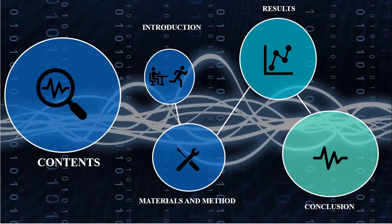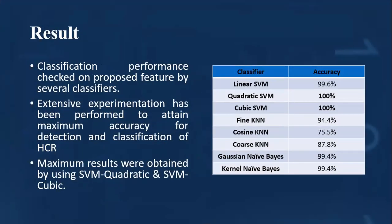Results: Results obtained from this classification are shown in this slide. Classification performance was checked on proposed features by several classifiers. Extensive experimentation has been performed to attain maximum accuracy for detection and classification of human context recognition. Maximum results were obtained by using SVM quadratic and SVM cubic. This table shows that SVM quadratic and cubic give highest accuracy of 100%.